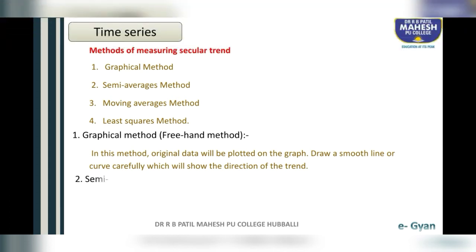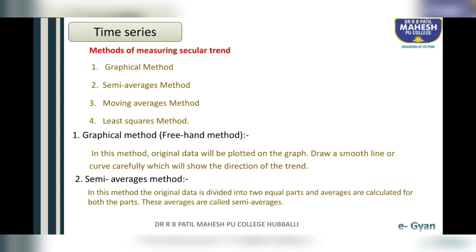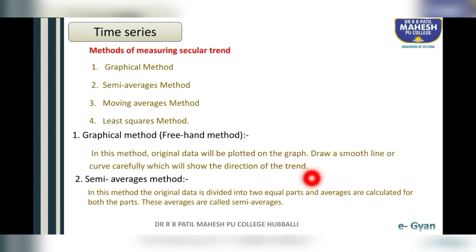The second method is the semi-averages method. In this method, the original data is divided into two equal parts, and averages are calculated for both the parts. These averages are called semi-averages.